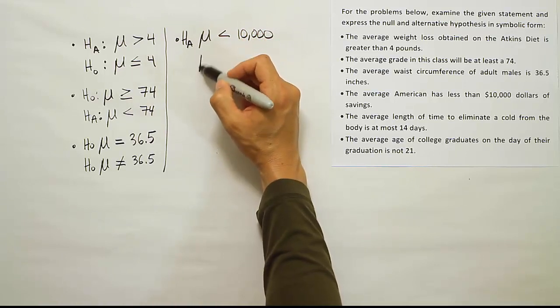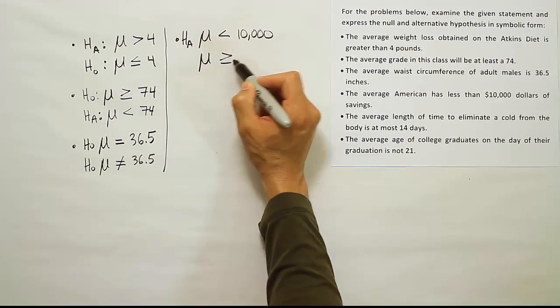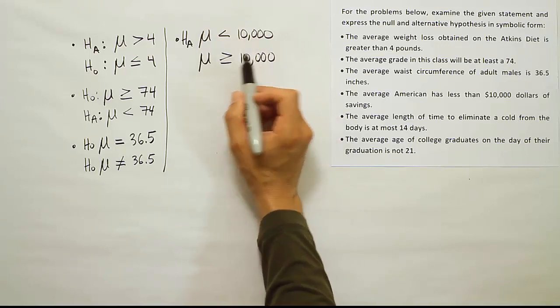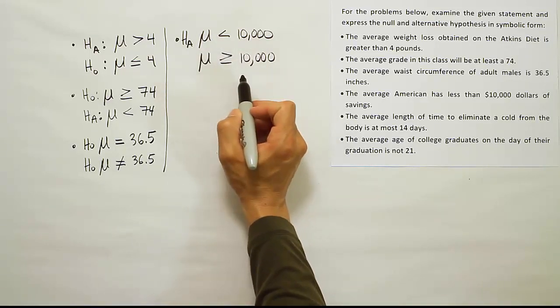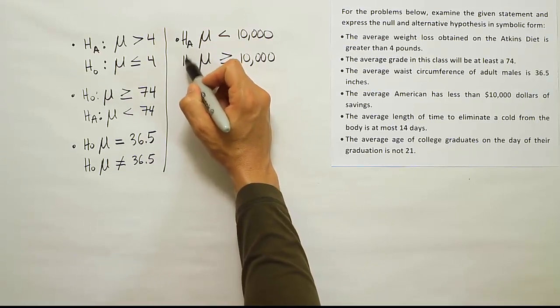Now the opposite of that is going to be greater than or equal to ten thousand. So that's the complement, the other scenarios. If you're not less than ten thousand, it's greater than or equal to ten thousand. And that'll be H₀.